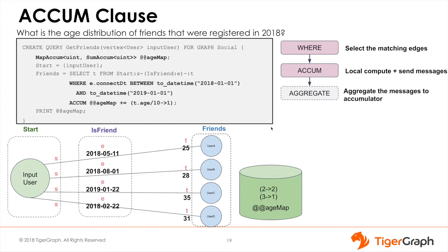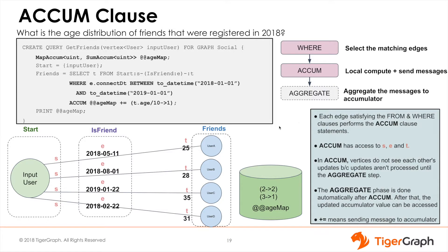Here's what we covered in this slide. Each edge satisfying the from and where clause performs the accumulator clause statements. The accumulator clause has access to the source vertices, edges, and target vertices.